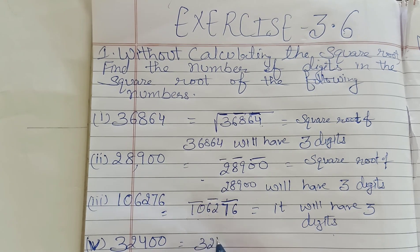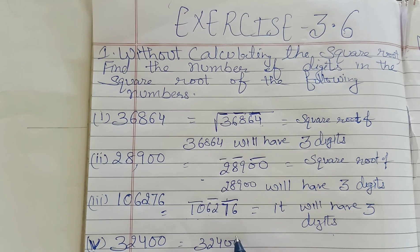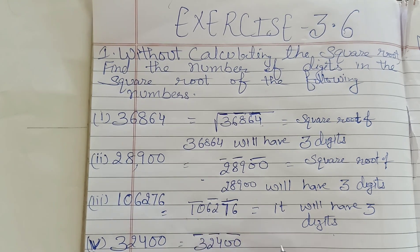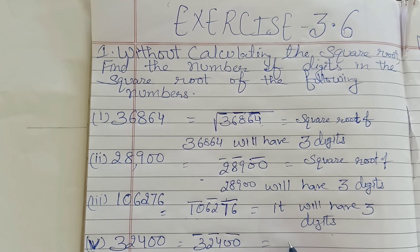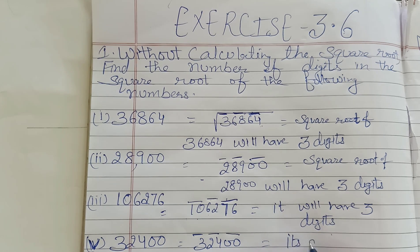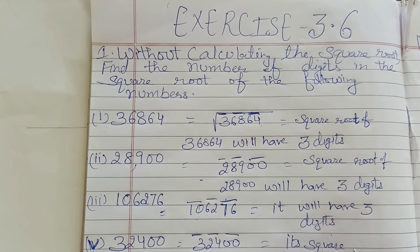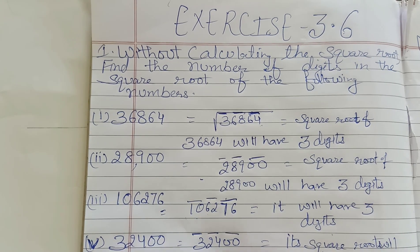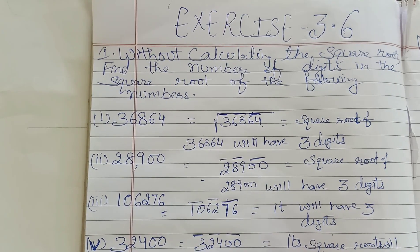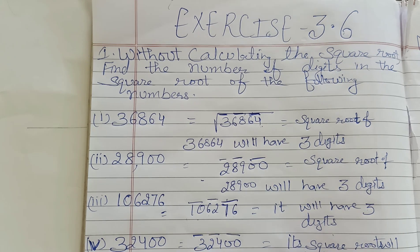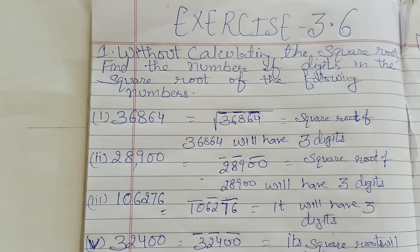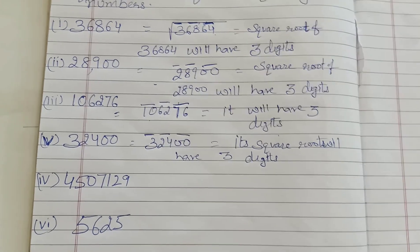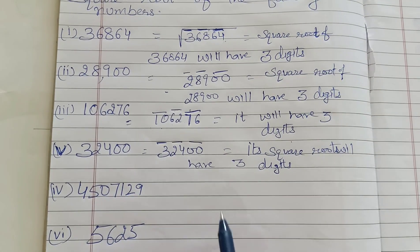Now next number is 32400. Start from the right side: one bar, two bar, three bar. So kitnay aayenge? Its square root will have three digits. Iska square root mein kitne digits honge? Three digits.